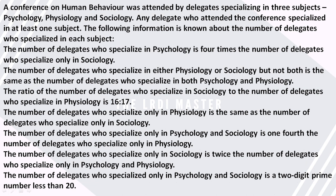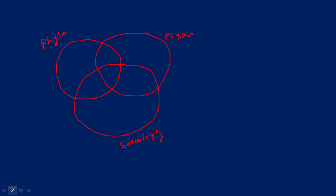The number of delegates specialized in psychology is four times the number of delegates who specialize only in sociology. So if we take sociology as 'a', then psychology will be '4a'. So our psychology value is 4a and our sociology is a.